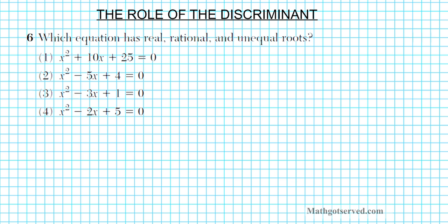The problem says: which equation has real, rational, and unequal roots? If you take a look at these equations, you notice that A, B, and C are rational numbers. So what we're going to do is create four cases where the discriminant can tell us detailed information about the nature of the roots.